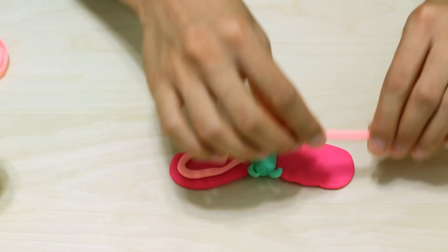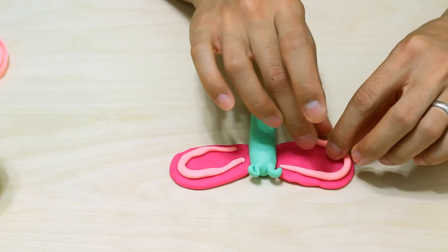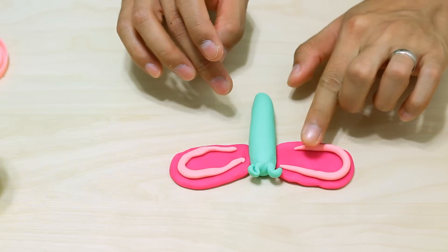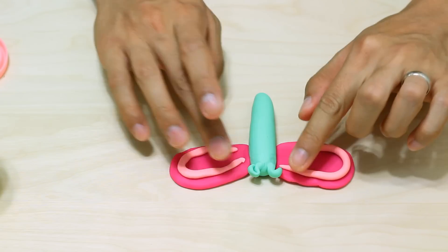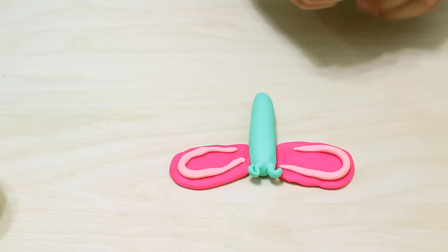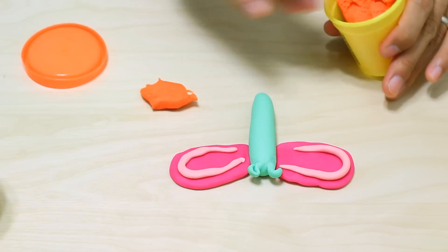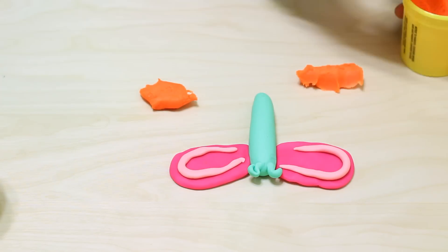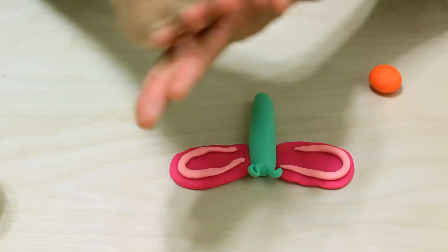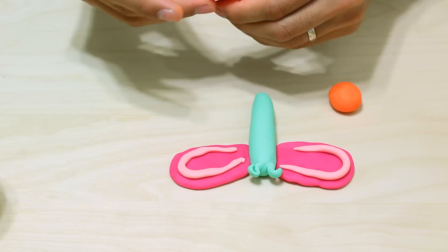Okay, there's one done and here comes the second. Now it's time to make the bottom wings. And for those I'm going to choose an orange color and just roll it out and flatten it out.